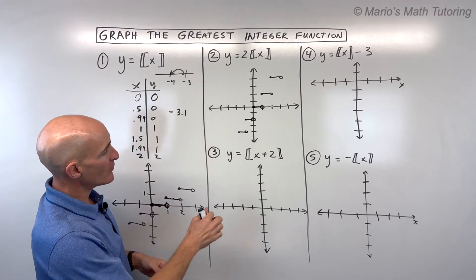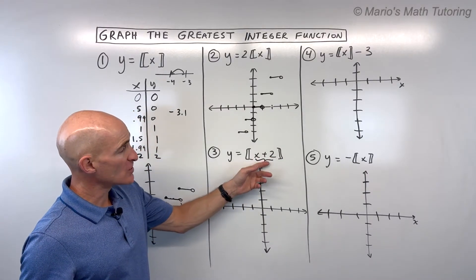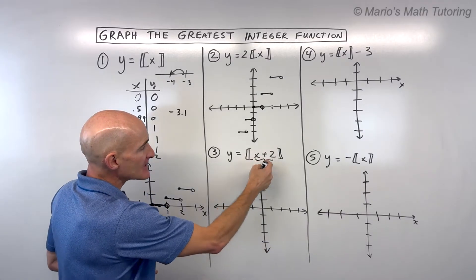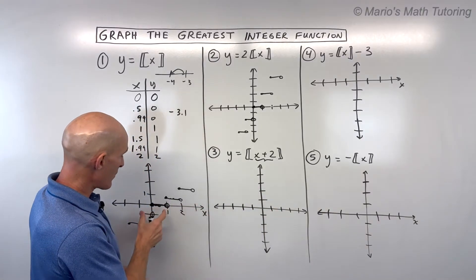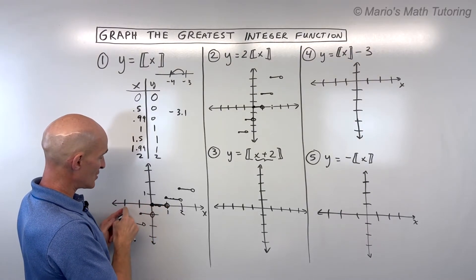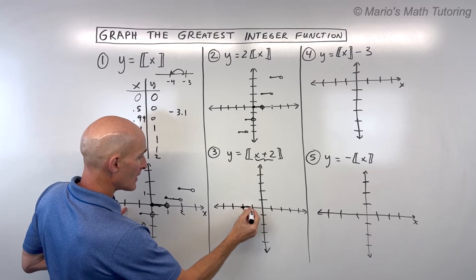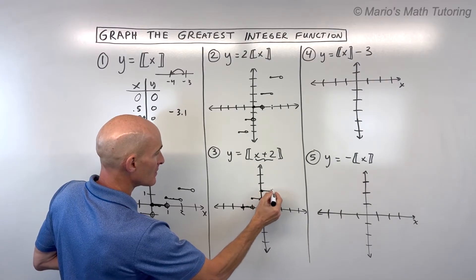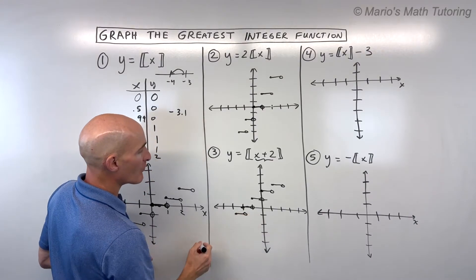For number 3, we've got y equals the greatest integer of (x + 2). Notice that's inside the double brackets — it's grouped with the x, so it affects the x coordinates, but with the opposite effect. The plus 2 is actually going to shift everything to the left 2. So if we know our basic graph, this is going to start right here at negative 2, and open on the right. Everything shifts left 2, and you can repeat that process.